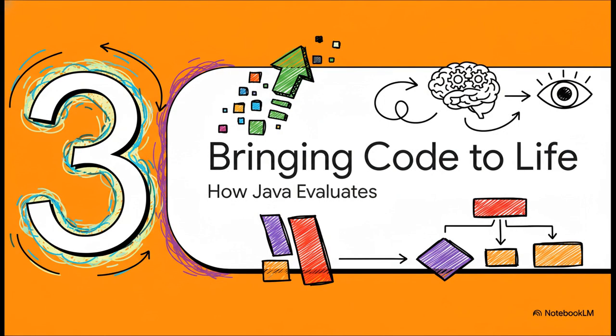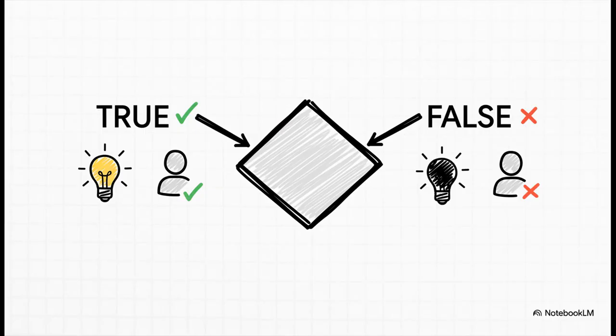This right here is the moment our code stops being just a static list of instructions and actually starts coming to life. It's learning to look at the world around it and react. So let's dig into how that actually works. Now, at the heart of every single if statement is something called a Boolean expression. Don't let the fancy name fool you. It's just a statement that can only ever be one of two things: true or false. There's no maybe. Is the user logged in? True or false? Is the temperature above 70 degrees? True or false?